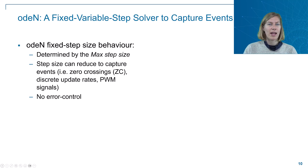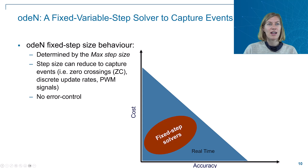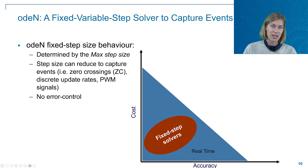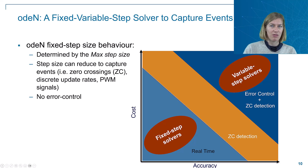Looking at where those different types of solvers live in terms of accuracy and cost: fixed step solvers typically come with lower cost but also tend to have lower accuracy. If you start capturing events such as zero crossings and also want to provide error control, this is where variable step solvers live, which tend to come at higher cost but also provide higher accuracy. The ODE-N solver is located in between these two, with the ability to capture zero crossings, but it does not provide error control.